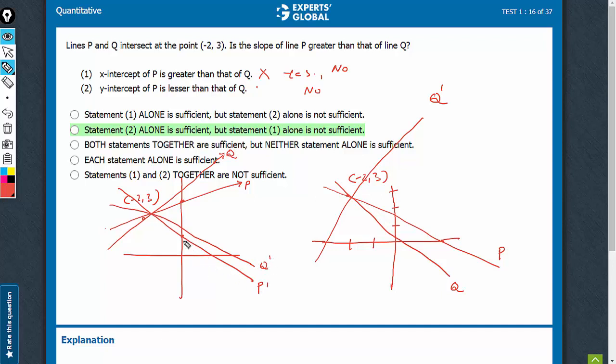In this case also, the line p is falling more sharply. So even for a falling line, you see that the y-intercept of p is lower. For that to be true, the slope should also be lower. We are definitely getting no as an answer. In this case, we could not get a yes as an answer using statement 2. Therefore, this statement is sufficient.